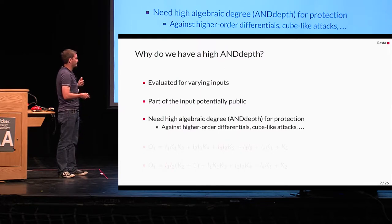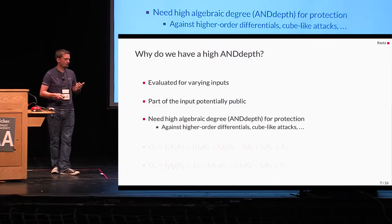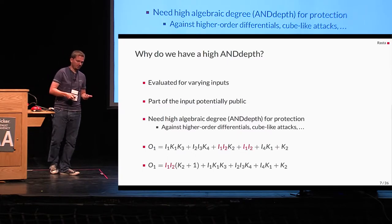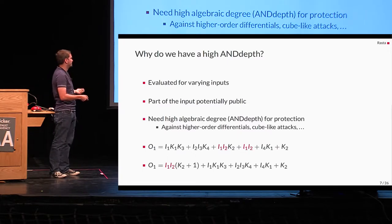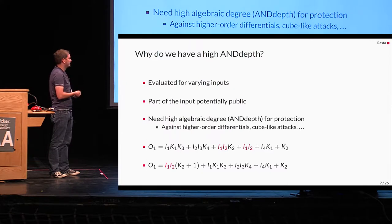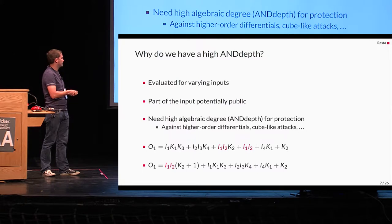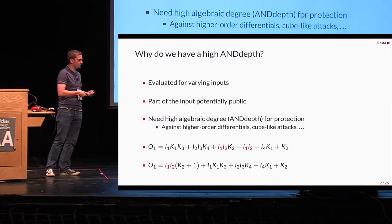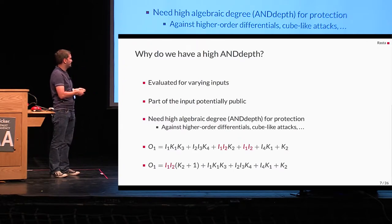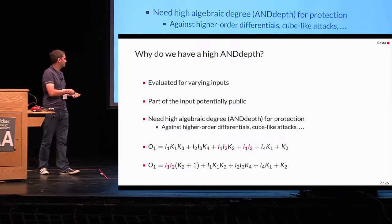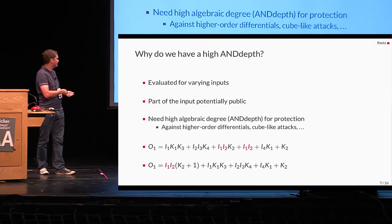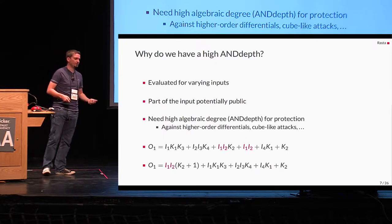For instance, let us consider an attacker who has control over the input and we have some symmetric primitives which has a low degree output function. Then an attacker could do the following. He could just set some input bits to a constant value while iterating over all possible values of some bits. And then as you can see here if he sums up the output bit he gets a linear equation in the key bits which is quite bad.